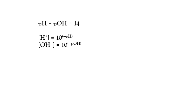The third formula to know is pH + pOH = 14. This is very useful. If pH is known and pOH is needed, simply calculate pOH = 14 − pH. Conversely, if pOH is known and pH is needed, calculate pH = 14 − pOH.